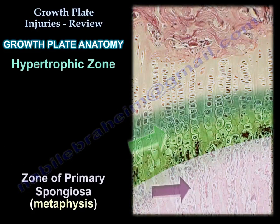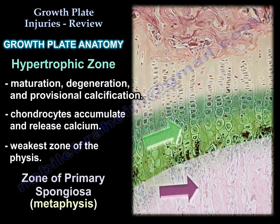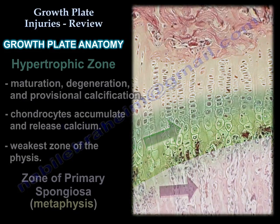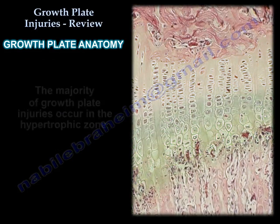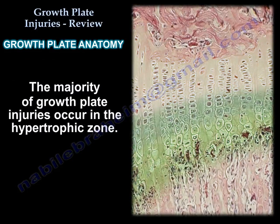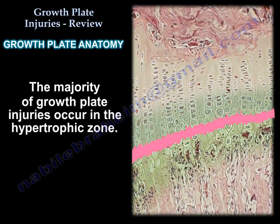Then the hypertrophic zone involves maturation, degeneration, and provisional calcification. The chondrocytes accumulate and release calcium. This is the weakest zone, and the majority of growth plate injuries occur in the hypertrophic zone.